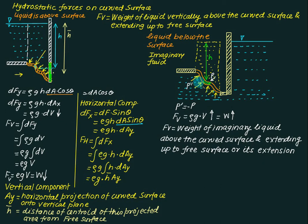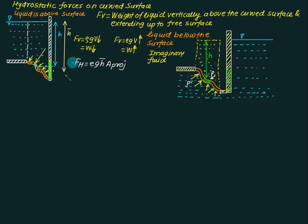In summary: when liquid is really present above, the vertical force is ρg·V acting downward, where V is the volume from the gate up to the free surface. When liquid is present below (imaginary column), the force is the same magnitude ρg·V but acts vertically upward. In both situations, the horizontal force is calculated as FH = ρ × g × h̄ × A_projected.